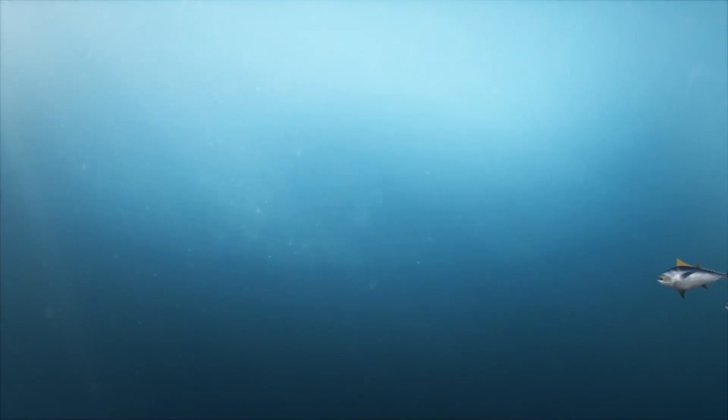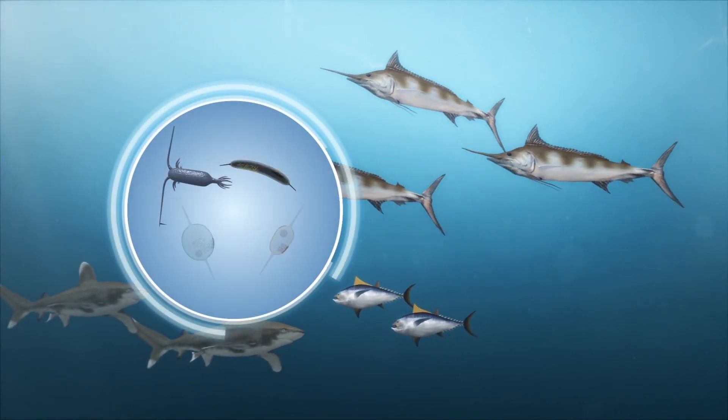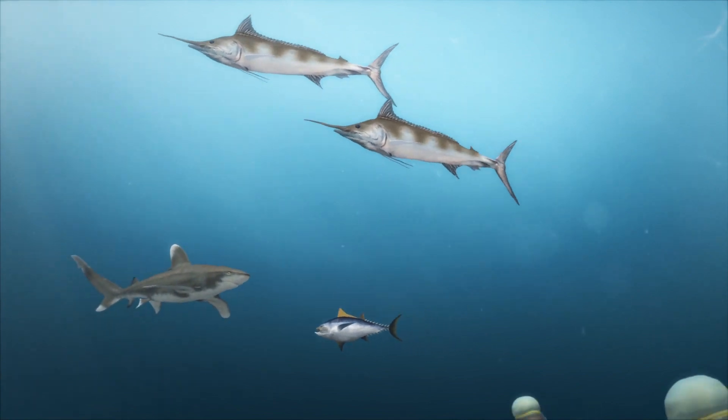The IUCN states that deoxygenation harms bigger fish that are oxygen sensitive, such as tuna, marlin and sharks, but favors microbes and jellyfish that are not.